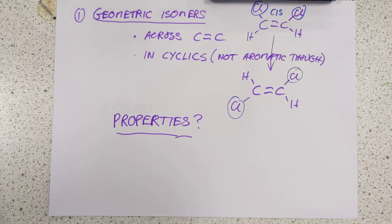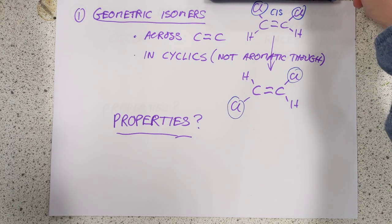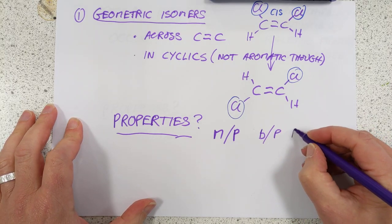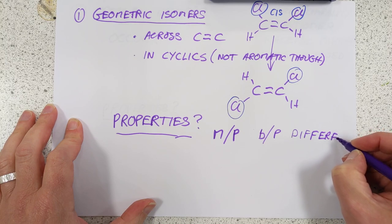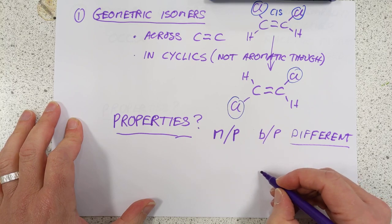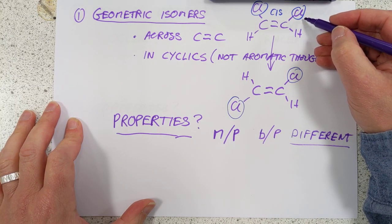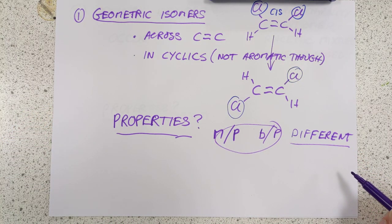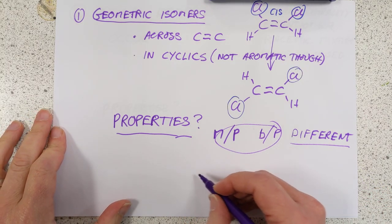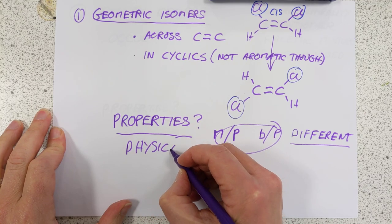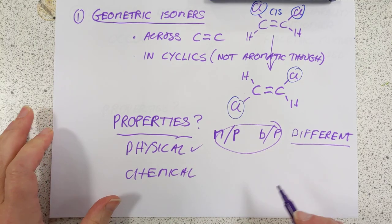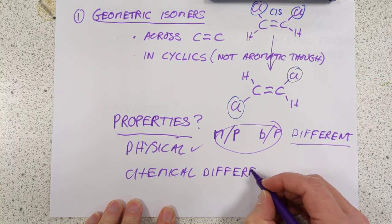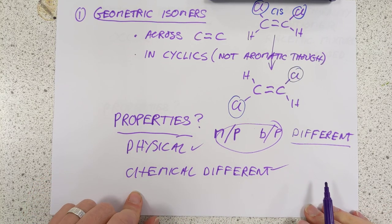Properties. The SQA wants you to know that geometric isomers are quite seriously different molecules to each other, which results in different properties. Melting point and boiling point can be measurably different — because of stacking. If you imagine cis molecules, they stack together differently compared to trans molecules. That affects the strength of the London dispersion forces and therefore changes your melting and boiling points. The SQA also wants you to know that chemical properties can be quite different too — you can get different chemical reactions. So: physically different, chemically different for geometric isomers.